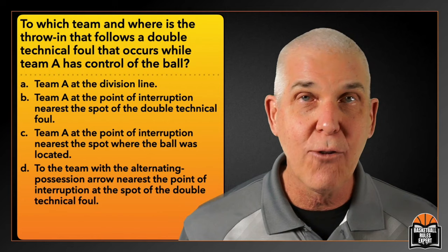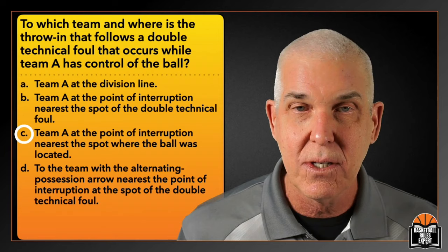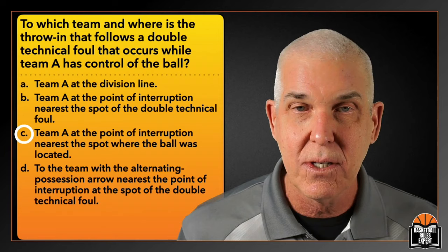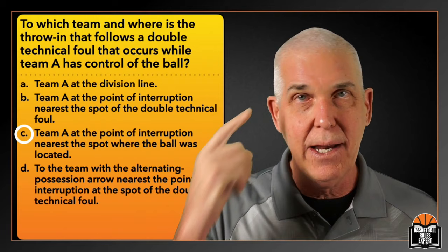The key concept on this play is double. Double-tactical, double-foul — always no free throws will be shot; resume play at the point of interruption. What does point of interruption mean? Team A had team control, was dribbling near the division line — that is the point of interruption. Ball goes to that team at the spot nearest to where the ball was. Our correct answer is C — Team A at the point of interruption nearest to where the ball was located. If we can take that with us: double-foul means point of interruption, ball at the spot nearest to where it was.